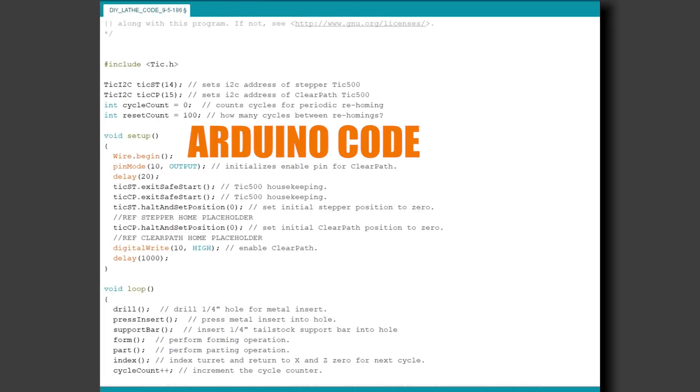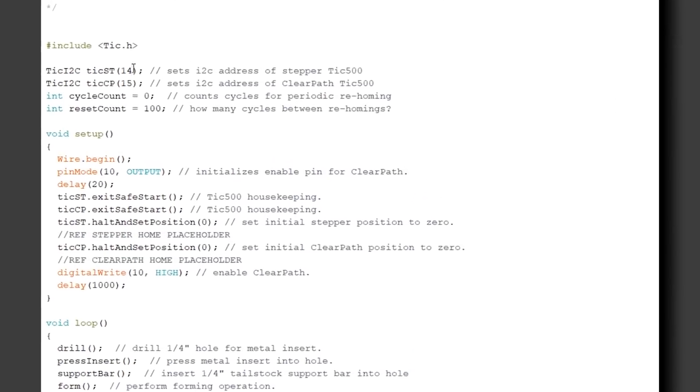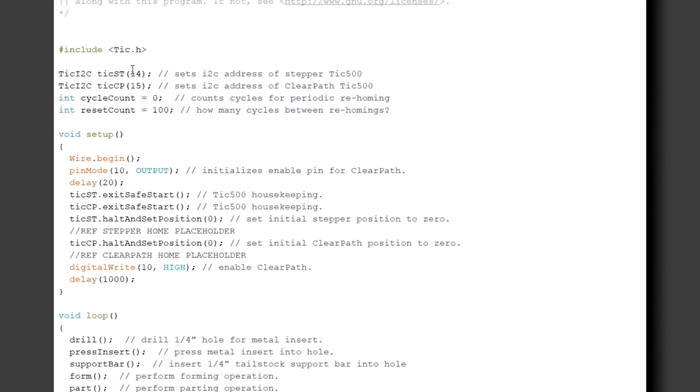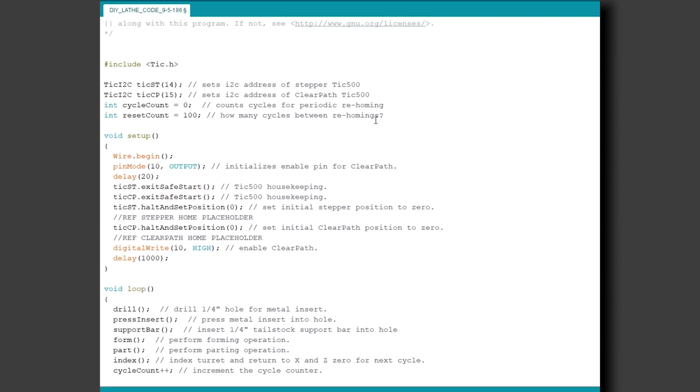Now onto the Arduino code. We still have some final tweaks to make at the end, once the machine is totally finished, but there's enough here to get the thing moving and show you guys what we're doing. First up, since the TIC500 controllers communicate with the Arduino over the I2C bus, we have to set them to different I2C addresses. We want to be able to re-home the machine after a certain amount of cycles, so this variable keeps track of completed cycles, and this variable is where we set how many cycles between re-homings.